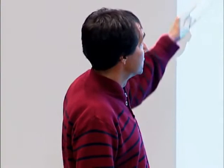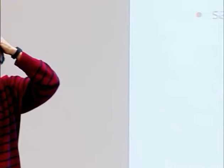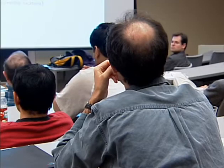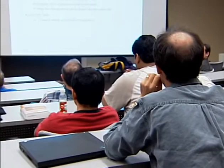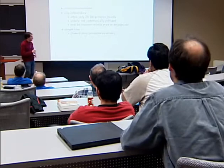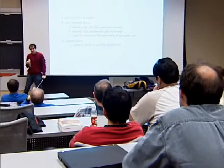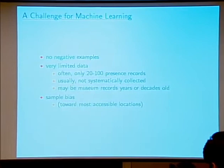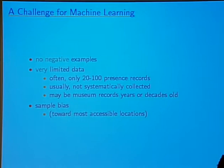Another challenge is very limited data. The example I gave had 800 data points, but a more typical data set would only have something like 20 to 100 records. You might ask why not just collect more data — the reason is because they're most interested in rare species, and for rare species it's hard to collect data. Also, a lot of the data is not systematically collected but rather gathered in a more haphazard way.